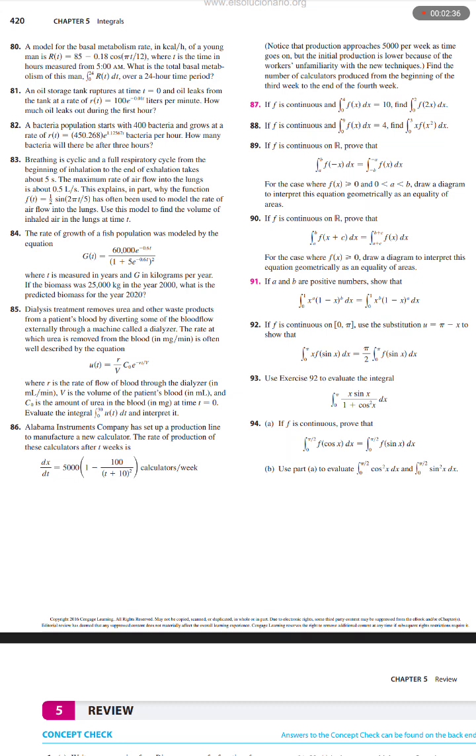Breathing is cyclic and a full respiratory cycle from the beginning of inhalation to the end of exhalation takes about five seconds. The maximum rate of air flow into the lungs is about 0.5 liters per second. This explains in part why the function f(t) equals one half sine of two pi t over five has often been used to model the rate of air flow into the lungs. Use this model to find the volume of inhaled air in the lungs at time t.